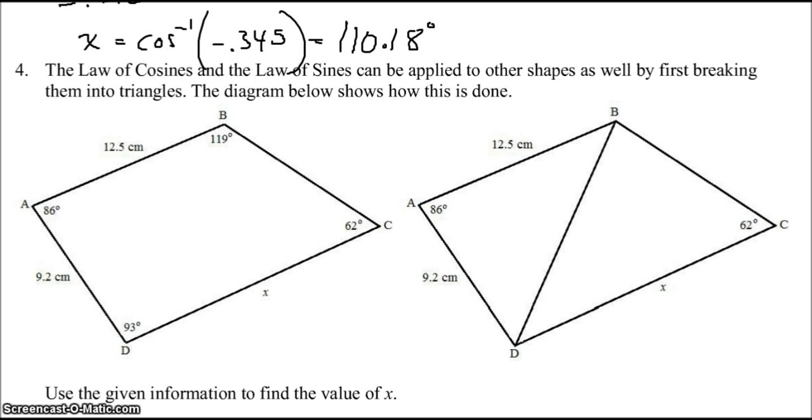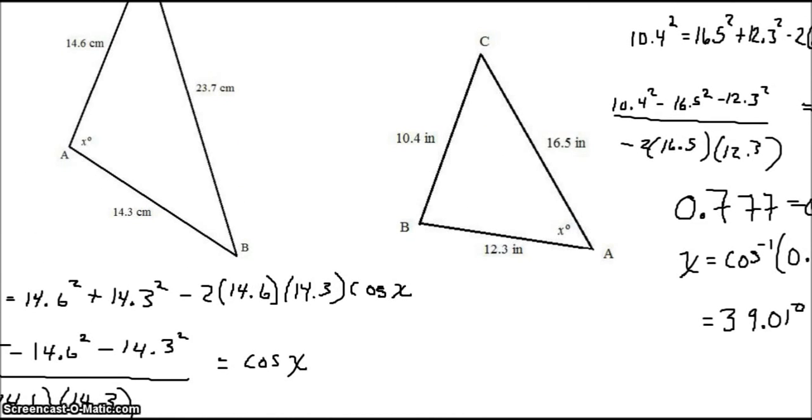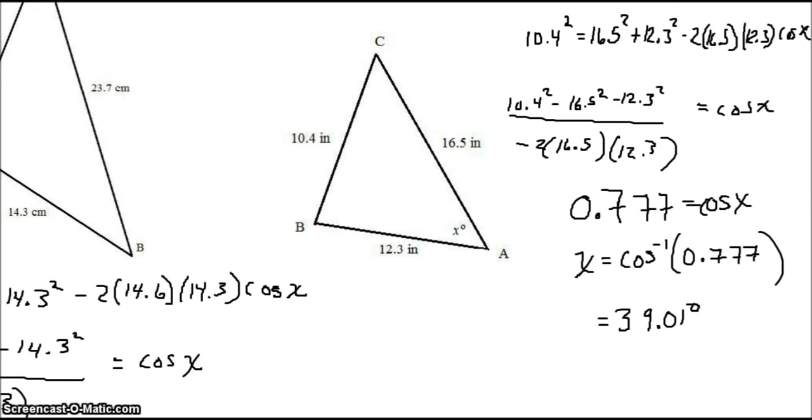Before going on, just let me make one more point here. What we've done here sort of demonstrates in general what we could always do to find the angle. The measure of angle A would always be equal to A squared minus B squared minus C squared. I guess these should really be little As. Little A squared, little B squared, little C squared,